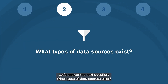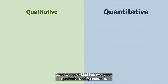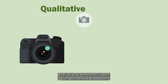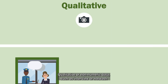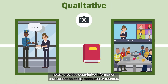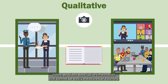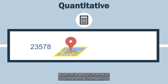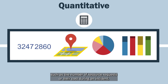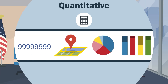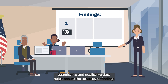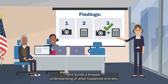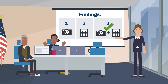What types of data sources exist? Data can be divided into two types: qualitative and quantitative. Qualitative, or non-numeric data, such as interview or hot wash notes, provides descriptive information that cannot be easily measured or counted. Quantitative data is information in the form of numbers, such as the number of resource requests or their costs during an incident. Using both quantitative and qualitative data helps ensure the accuracy of findings and builds a broader understanding of what happened and why.